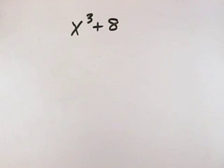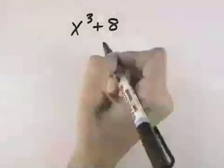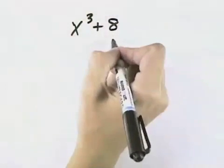In this problem, we want to factor it completely. There is no greatest common factor, so what we need to do is count the terms. Since there are two terms, we have difference of squares, but it's a sum, so that can't be. So we have sum or difference of cubes.